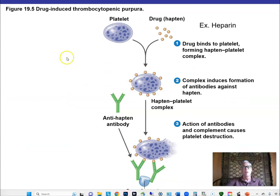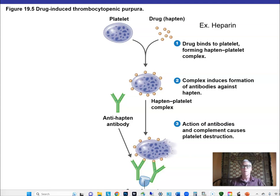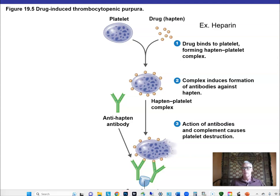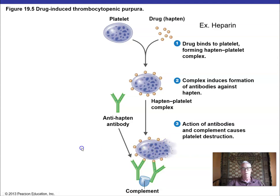Some antibiotics can act as a hapten and wind up causing an immune response against cells in our own body, such as platelets. This is illustrated by antibody-induced thrombocytopenia.